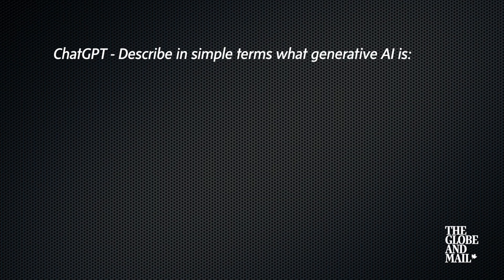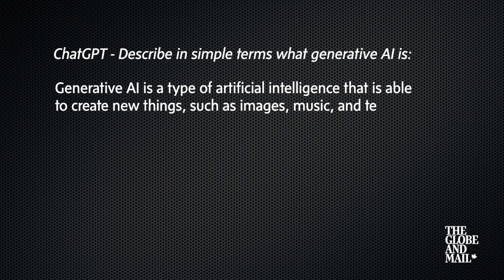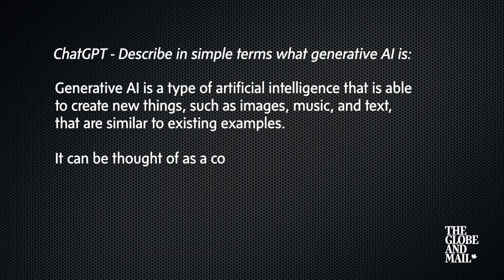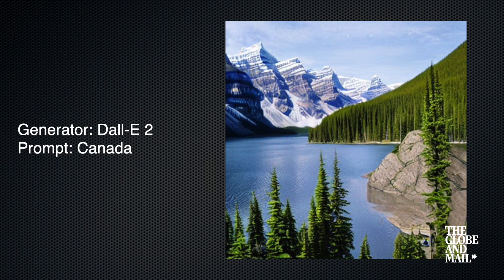How do these systems work? Well, I asked ChatGPT, which is another generative AI that works with text, to give that very answer. This is what it wrote: Generative AI is a type of artificial intelligence that is able to create new things such as images, music and text that are similar to existing examples. It can be thought of as a computer program that can imagine and generate new things based on what it has learned from the data it has been trained on. If you put more detailed prompts into these systems, of course, you'll get more precise results. And you'll get different results every time, too.